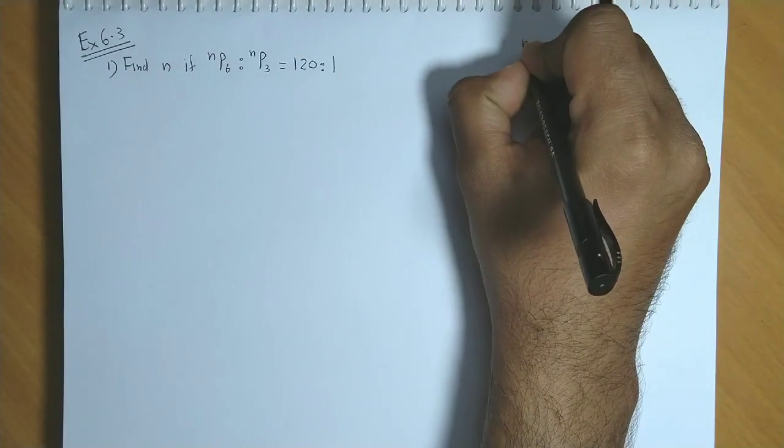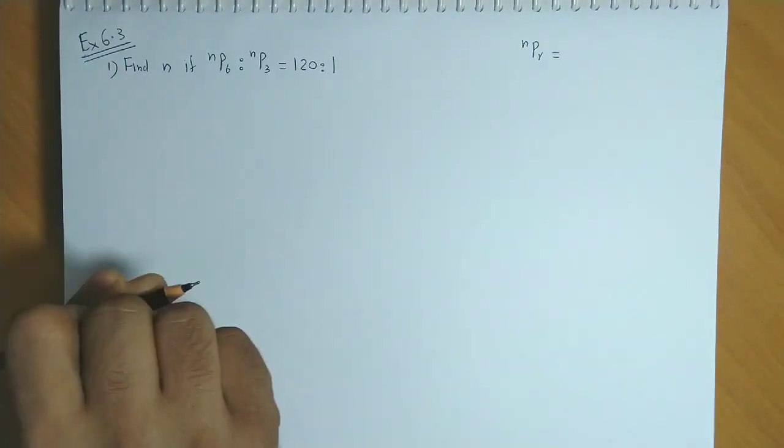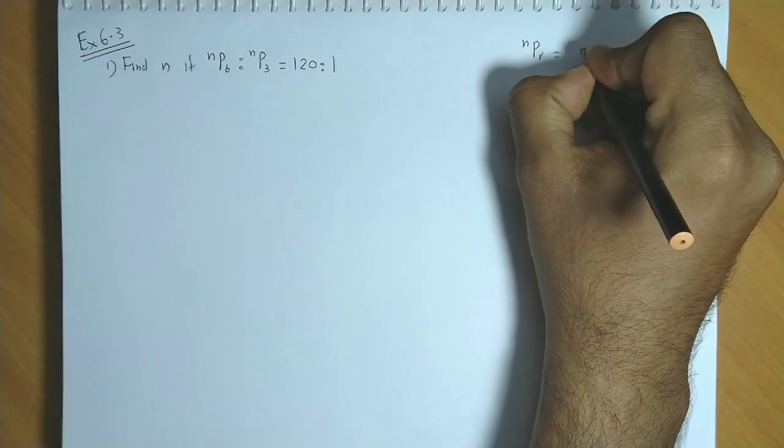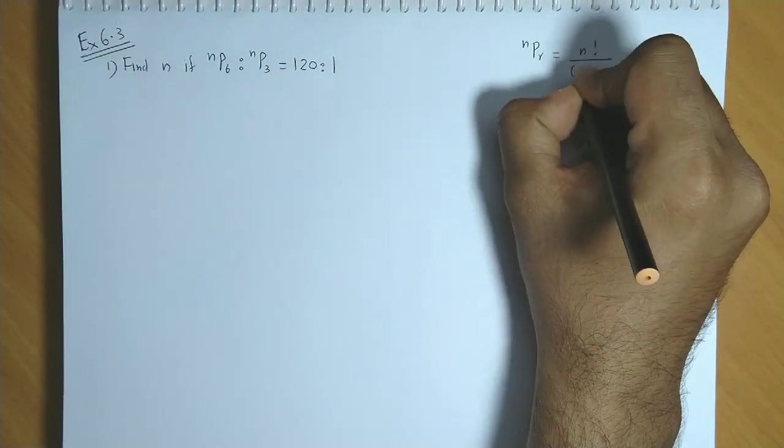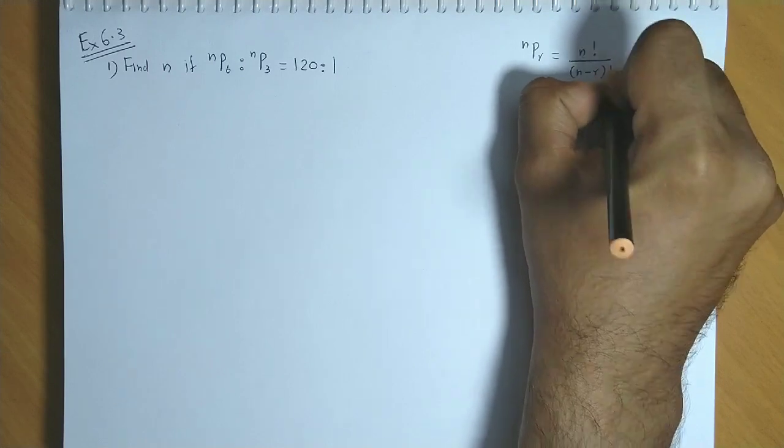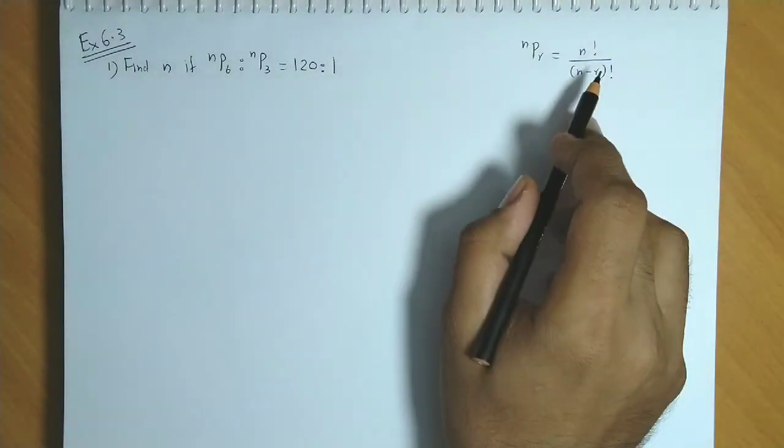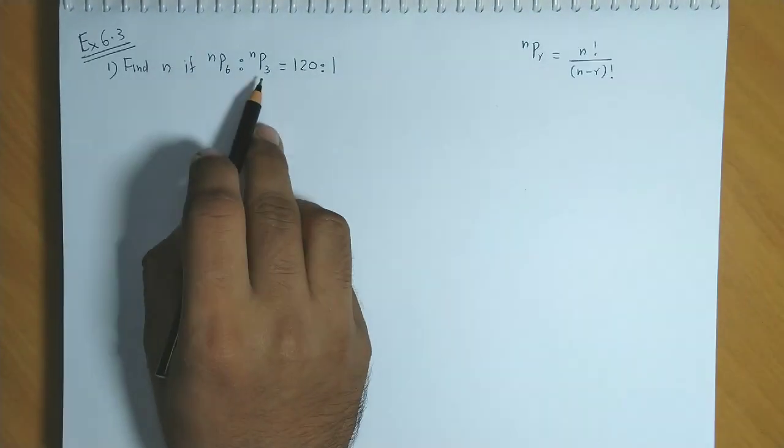This is based on the formula NPR. NPR is n factorial upon n minus r factorial. This formula we will use in both the permutations.